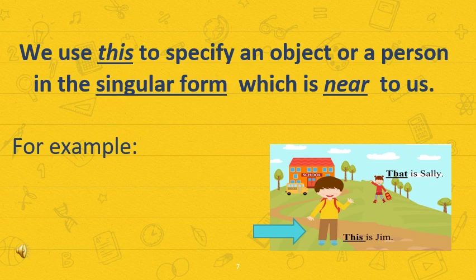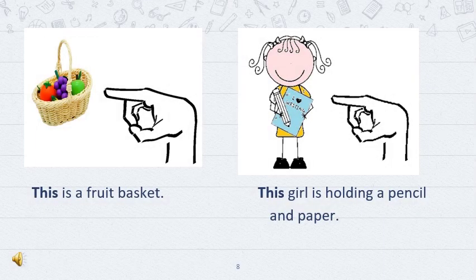We use 'this' to specify an object or a person in the singular form that is near to us. As you can see, this is Jim, which is really near to that place. Let's talk about this example: this is a fruit basket, which is really near to the pointed arrow. And as you can see in another example, this girl is holding a pencil and paper, which is really near to that pointing place.